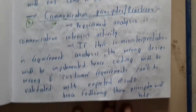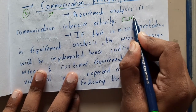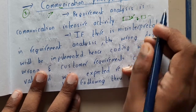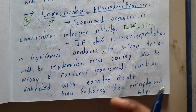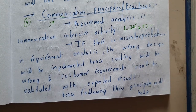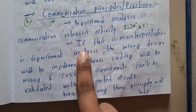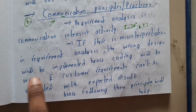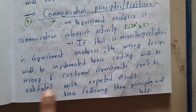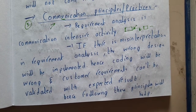Requirement analysis is a communication-intensive activity. The requirement analysis step should be done perfectly — if it goes wrong, it makes the whole project go to waste, because requirements are collected from the customer based on their final goal. If there is miscommunication in requirement analysis, the wrong design will be implemented, hence the code will be wrong and customer requirements cannot be validated. Following these 10 principles makes it very unlikely that you will get wrong requirements.